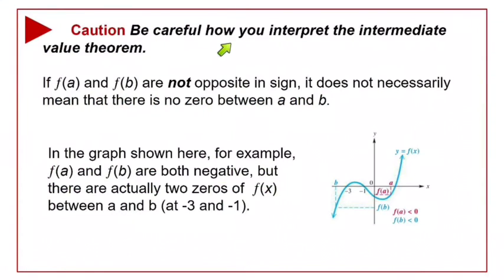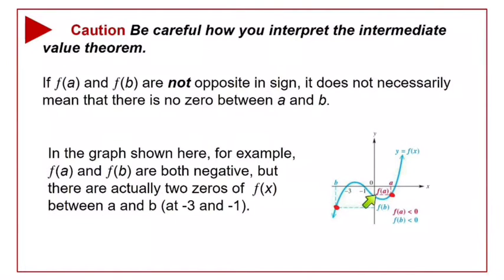Be careful how you think about the Intermediate Value Theorem. We know that if f(a) and f(b) are opposite in sign, there's at least one zero between a and b. However, if they are not opposite in sign, that doesn't mean there's no zero between a and b. Look at this function: f(a) and f(b) are both negative, yet the function crosses the x-axis and comes back. Same sign doesn't mean no zeros — it just means we're not guaranteed any. Different signs guarantee at least one.